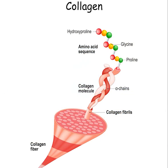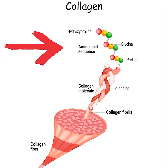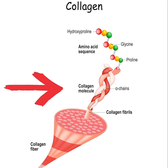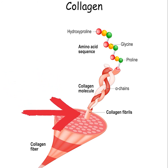The structure of collagen is like a rope, with individual amino acids called glycine, proline, hydroxyproline, and arginine. These amino acids link together to form long protein chains, then bundle together to form thicker strands.